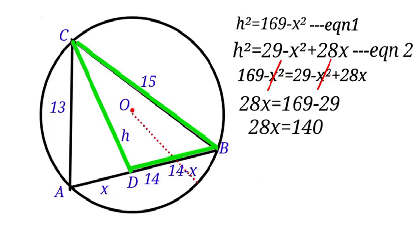We will have 28X equals 169 minus 29. So we will have 28X equals 140. When we divide both sides by 28, X will be equal to 5 units.